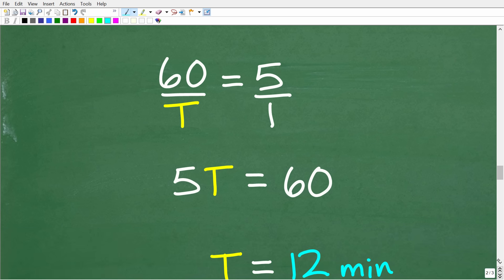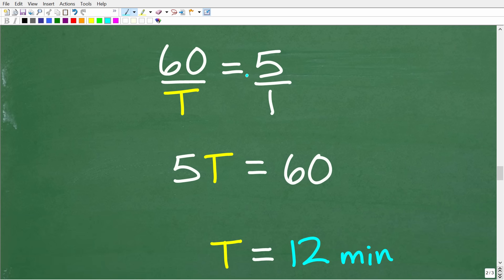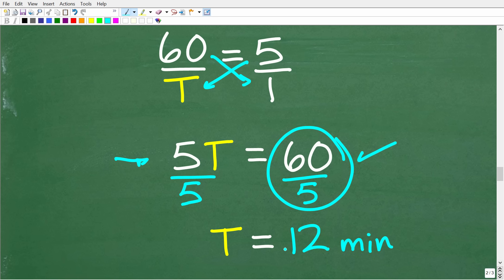Okay, now this is not the only way to solve this problem, but I think this is the easiest way. So 5 times T is 5T. 60 times 1 is 60. So now to solve for T, all we have to do is divide both sides of the equation by 5. So 60 divided by 5 is 12. So T is equal to 12. And remember, our units of measure are in minutes. So the correct answer is 12 minutes.